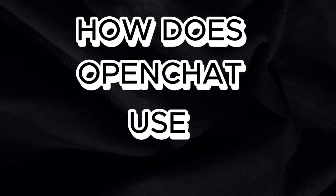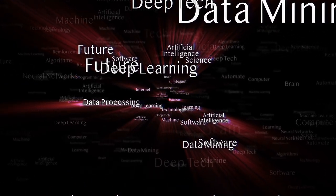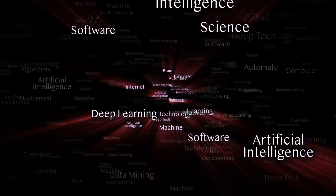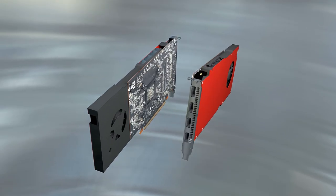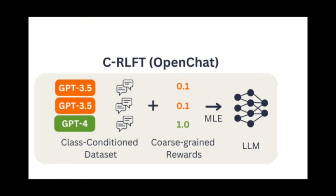How does OpenChat use this conditioned approach? OpenChat uses a class-conditioned RLFT method called conditioned reinforcement learning fine-tuning (CRLFT) to improve performance on par with ChatGPT, even with a 7B model which can be run on a consumer GPU with mixed quality data. CRLFT regards different data sources as coarse-grained reward labels and learns a class-conditioned policy to leverage complementary data quality information.